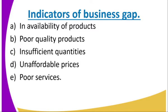What are the indicators that there is a business gap? Number one: unavailability of the product — the product is not produced or available in the area. For example, a business gap in spare parts means that motorcycles are available in the area, but there is no presence of spare parts. People have to get them from another market or place.